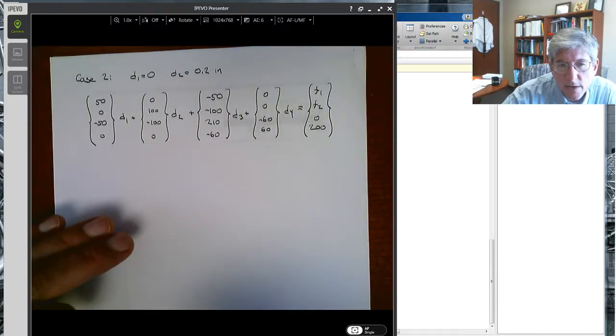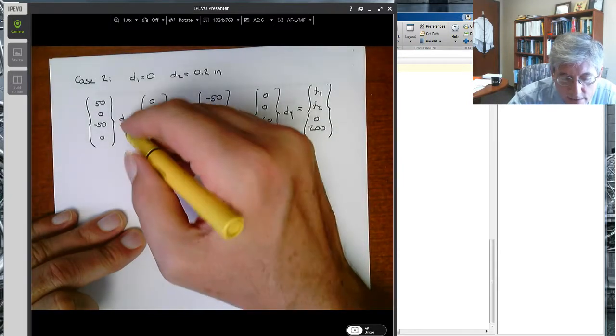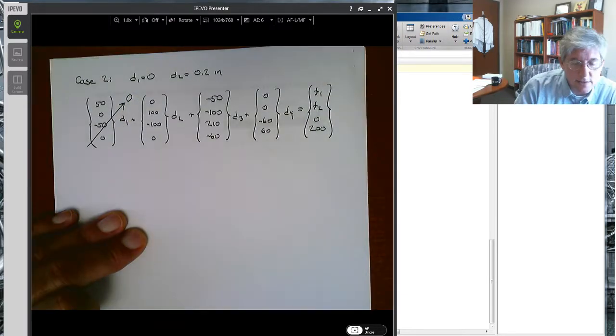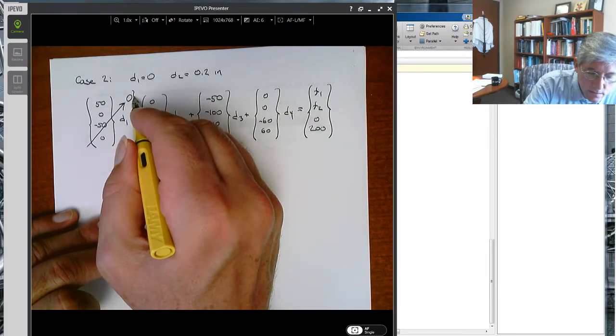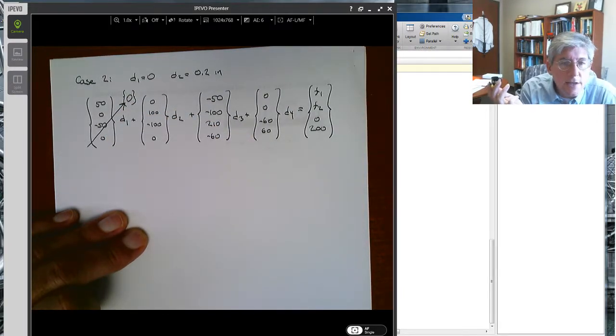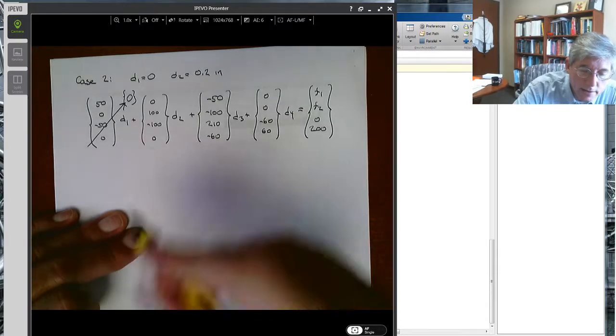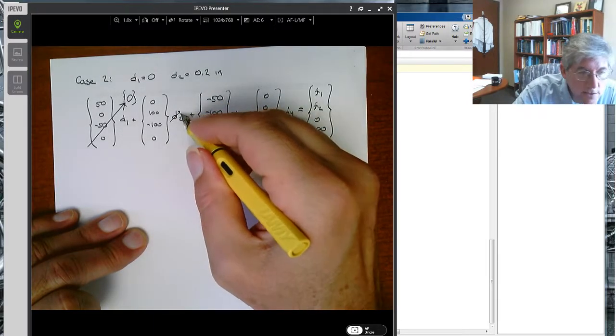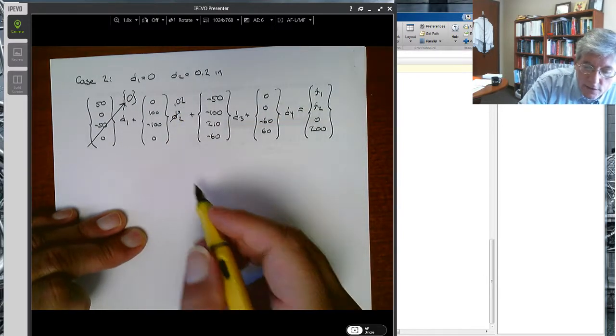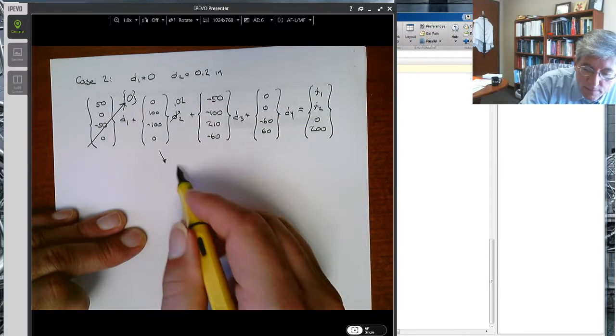So d1 is zero. That's a homogeneous boundary condition. Again, that basically allows us to set this entire column to a zero column. Now, I can't do that with d2, but this is known. This is a known value, it is 0.02.